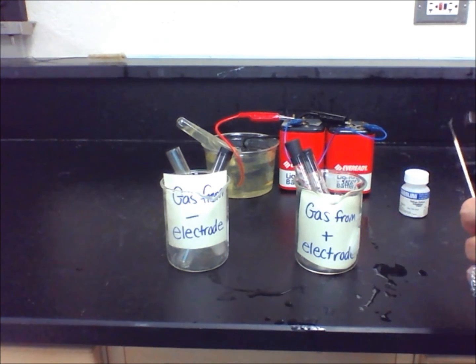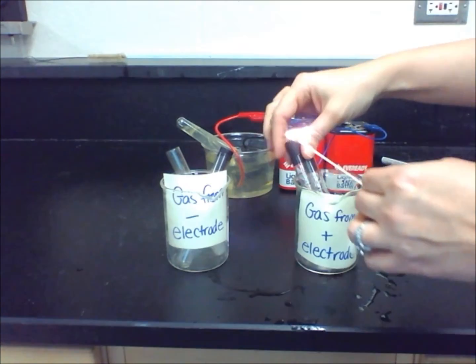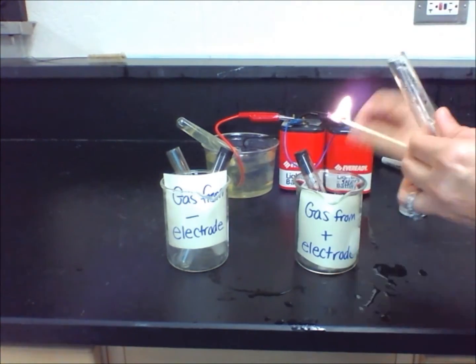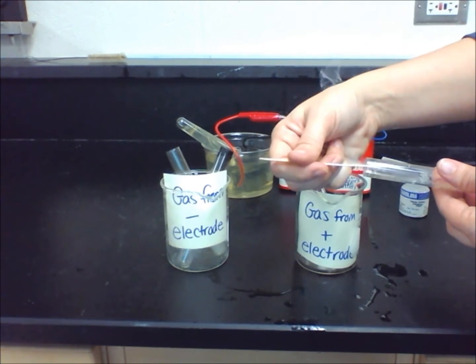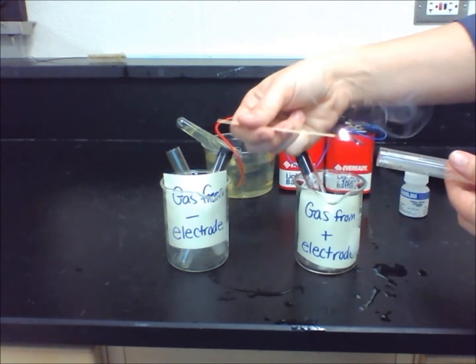In Table 1, when I test the gas collected from the positive electrode with the burning splint, you will notice that it burns slightly brighter and continues to burn, but does not make a lot of noise. Please record this information in the Table about Tube 2.